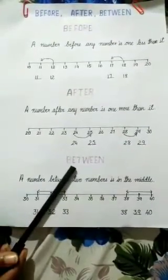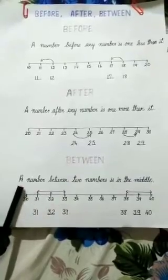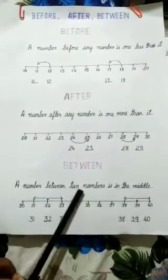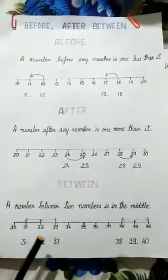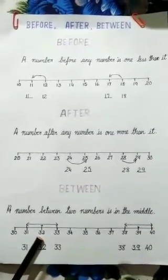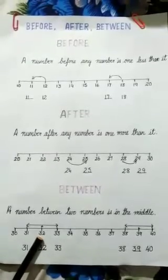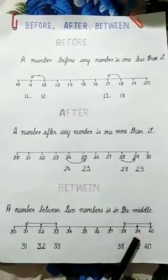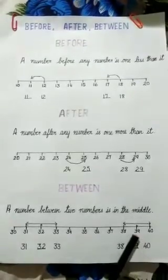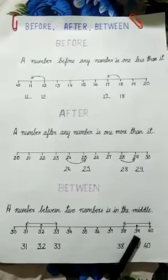Now between. A number between two numbers is in the middle. Which number is between 31 and 33? 32. Next one. Between 38 and 40? 38 and 40 is 39.